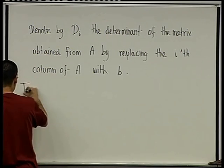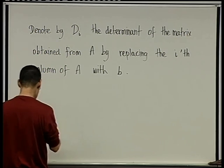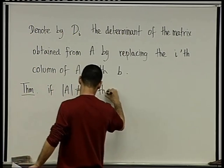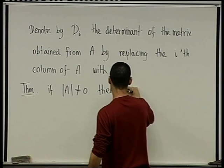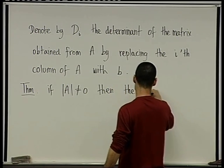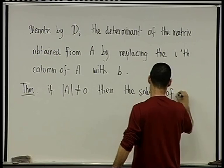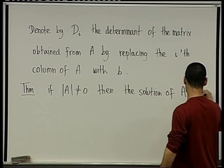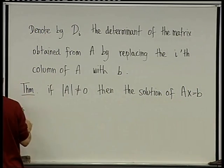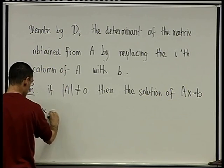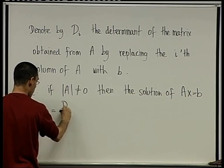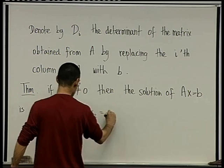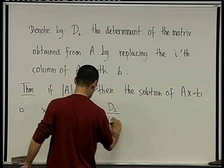And the theorem is that if the determinant of A is not zero, then the solution of, and it's a unique solution, it's the solution of AX equals B is: X1 is going to be this D1 divided by the determinant. X2 is going to be D2 divided by the determinant.